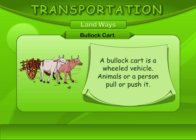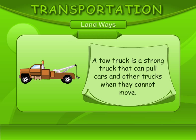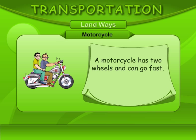A bullock cart is a wheeled vehicle — animals or a person pull or push it. A tow truck is a truck that can pull cars and other trucks when they cannot move. A motorcycle has two wheels and can go fast.